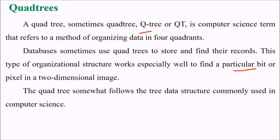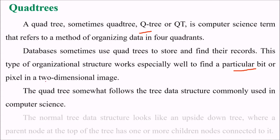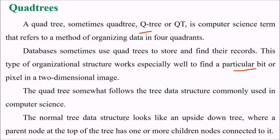The quadtree somewhat follows the tree data structure commonly used in computer science. The normal tree data structure looks like an upside-down tree. This is an upside-down tree where a parent node at the top of the tree has one or more children nodes connected to it.